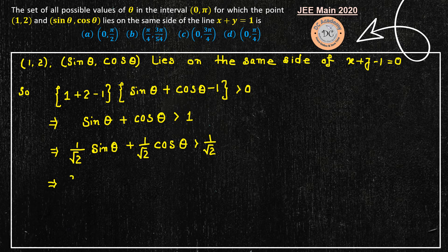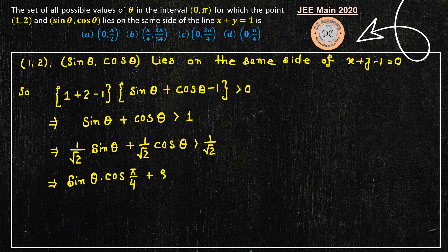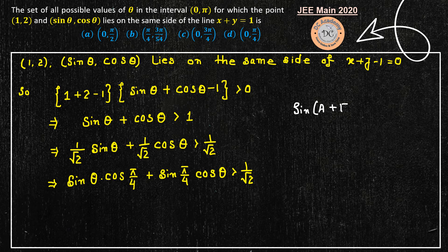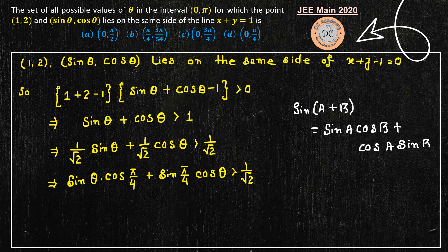Note that 1 over root 2 equals sin(π/4) and also cos(π/4). We can write the left side as cos(π/4) sin theta plus sin(π/4) cos theta, which is greater than 1 over root 2. Recalling the sine addition identity sin(A + B) equals sin A cos B plus cos A sin B, with A equal to theta and B equal to pi by 4, this simplifies to sin(theta plus pi by 4) greater than 1 over root 2.